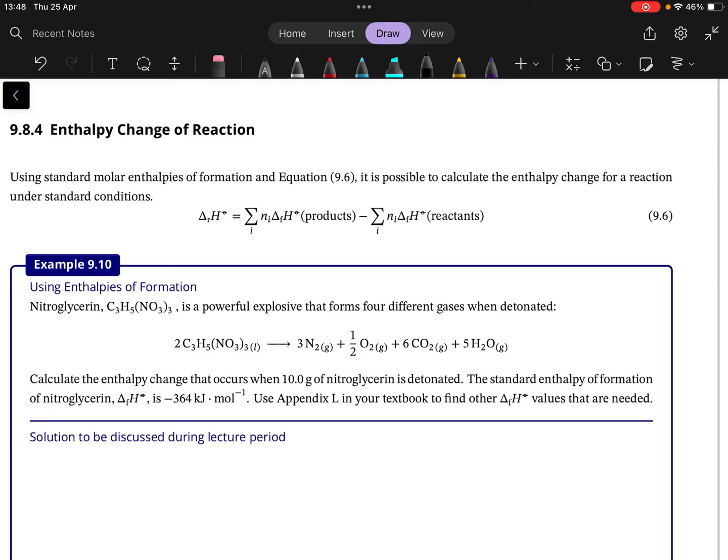The nice thing though is once we have the enthalpy of formation of a compound, we can use that to calculate the enthalpy of reaction. So this weird and wacky equation, or not weird and wacky, it's just something that means the sum—so these sigmas—means we need to sum.